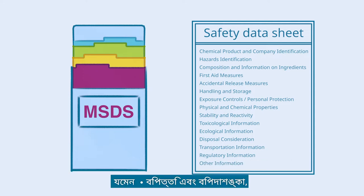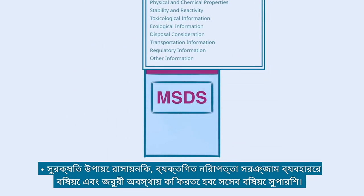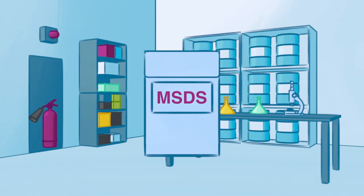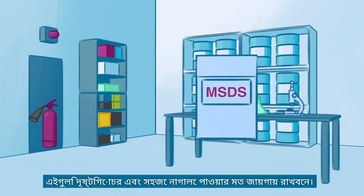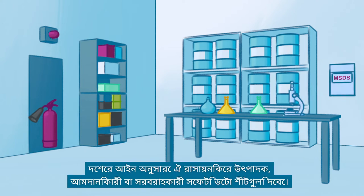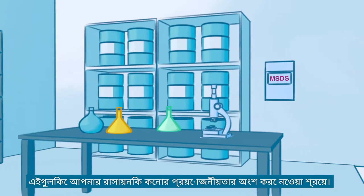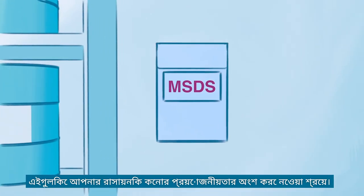For example, the hazards and risks, recommendations on the safe use of chemicals, personal protective equipment, and what to do in an emergency. Keep them visible and readily accessible. The Safety Data Sheets should be provided by the manufacturers, importers or suppliers of that chemical, according to national regulations. It is best to make this part of your chemical purchase requirement.